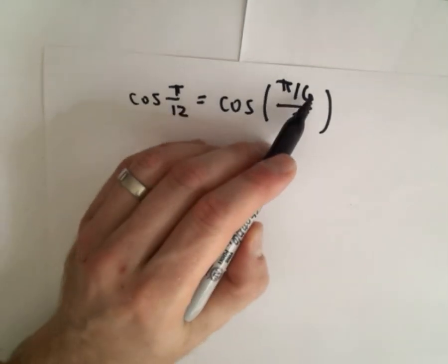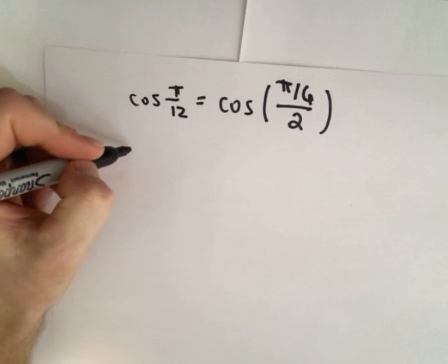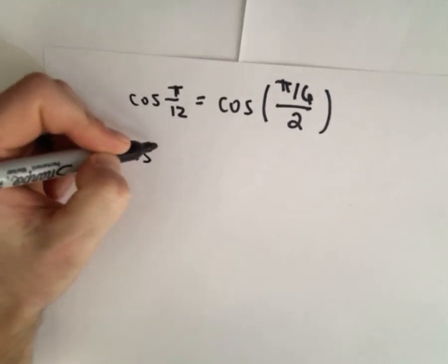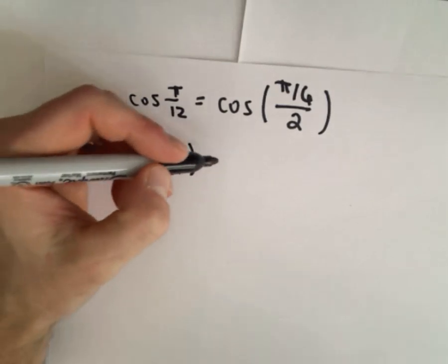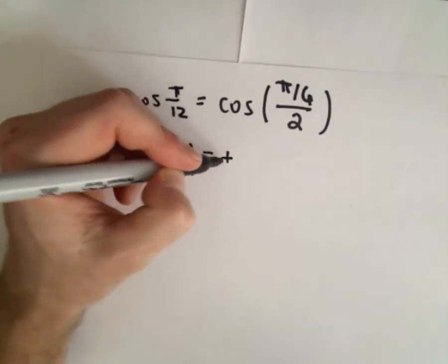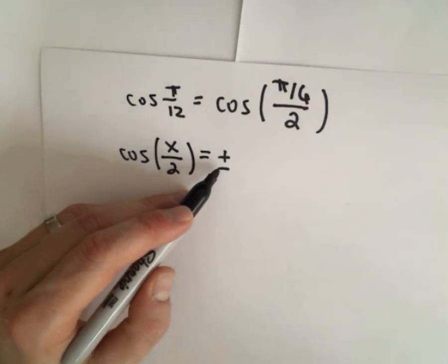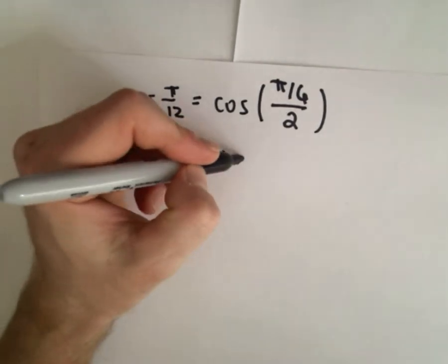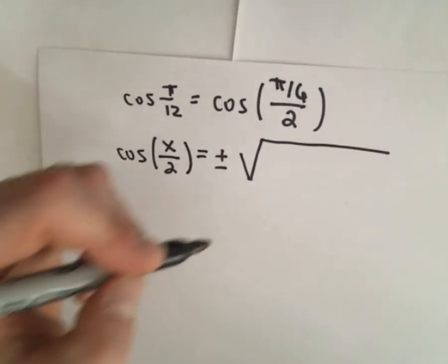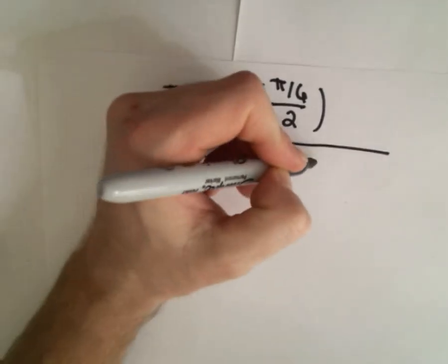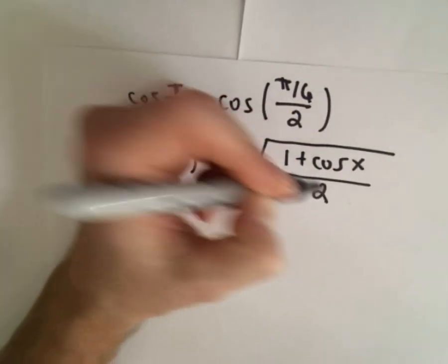So pi divided by six divided by two will give us pi over 12. And now again, it's just a matter of using an identity. So cosine of x over two, the identity here in general, it's going to be plus or minus. That's something you have to determine. But we have information to determine whether it's positive or negative. We'll talk about that again in just a second. And that gives you one plus cosine of x, all of that divided by two.